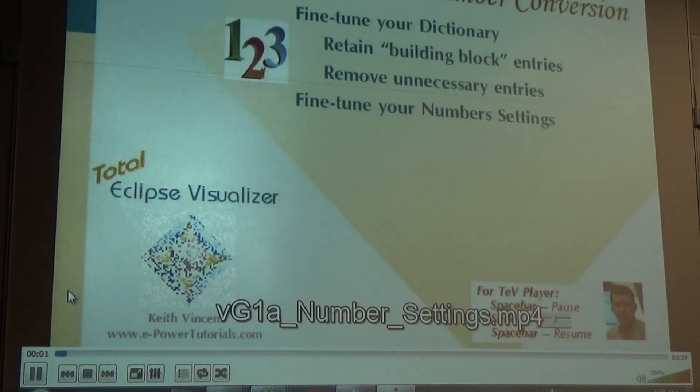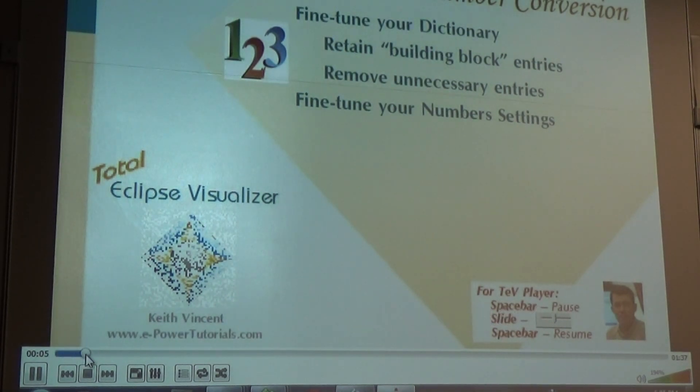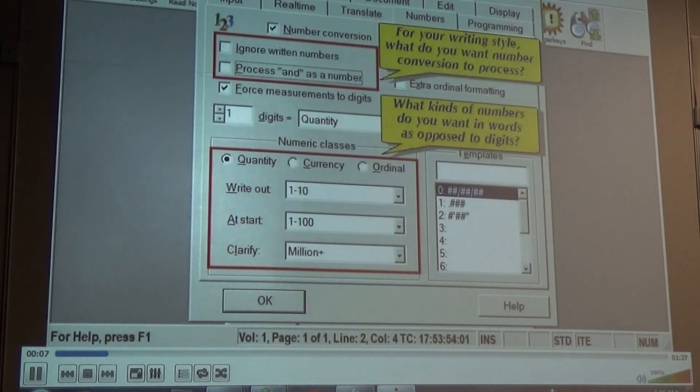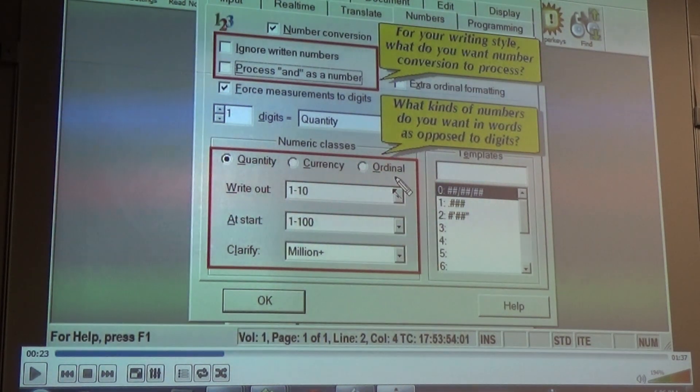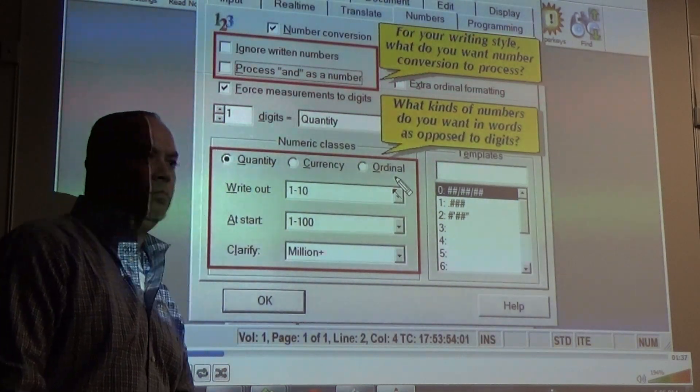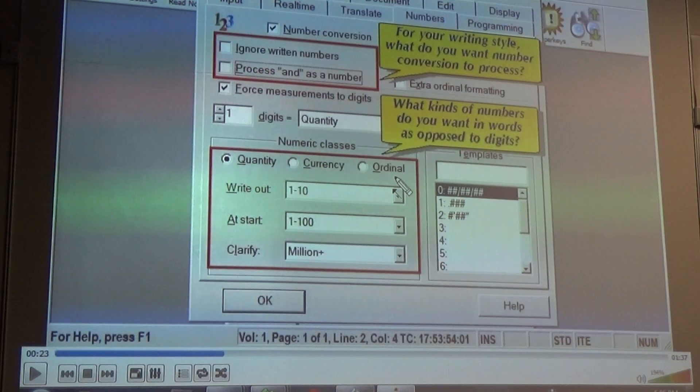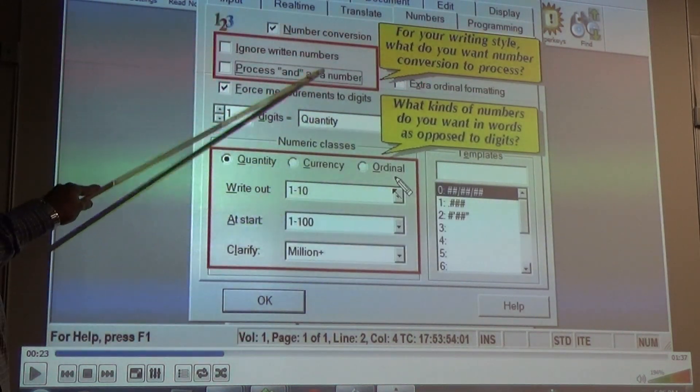Here are two quick examples of how to fine-tune your numbers settings. The numbers section of your user settings asks two general questions. First, how do you write numbers? So what do you even want number conversion to process? And second, what kinds of numbers do you want in words as opposed to digits? You see what it's telling you right there? Go into Alt-U. And go into numbers. That's where this is. That's where all of these settings are right here.